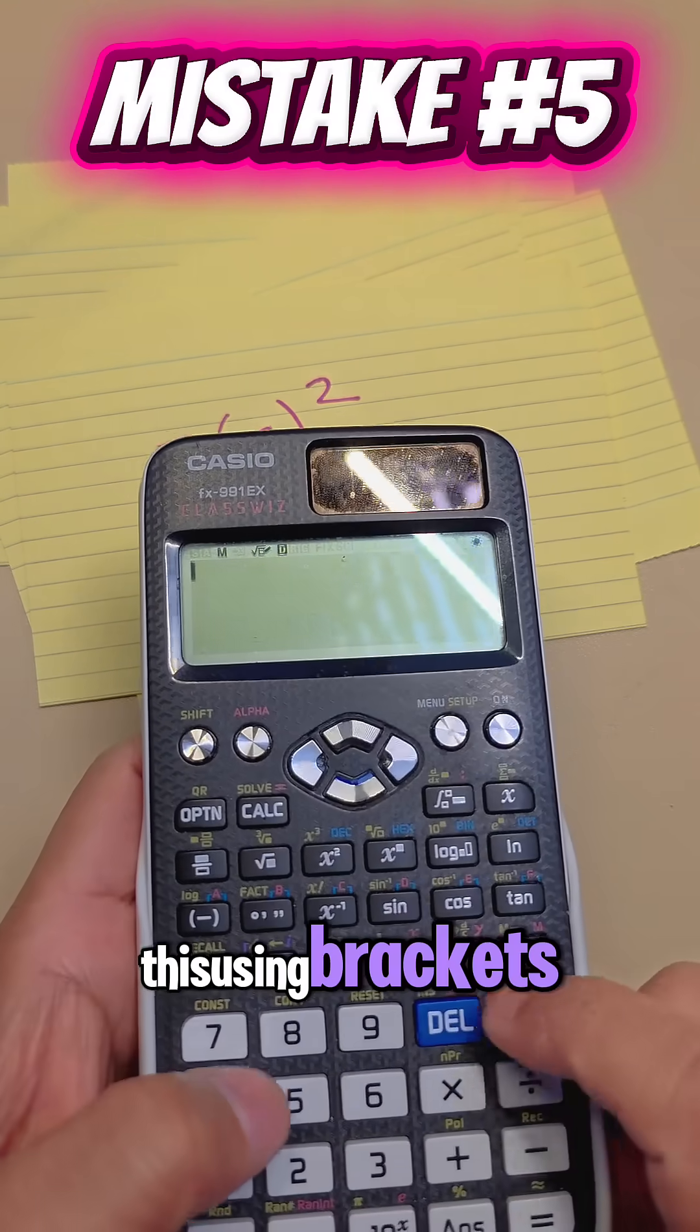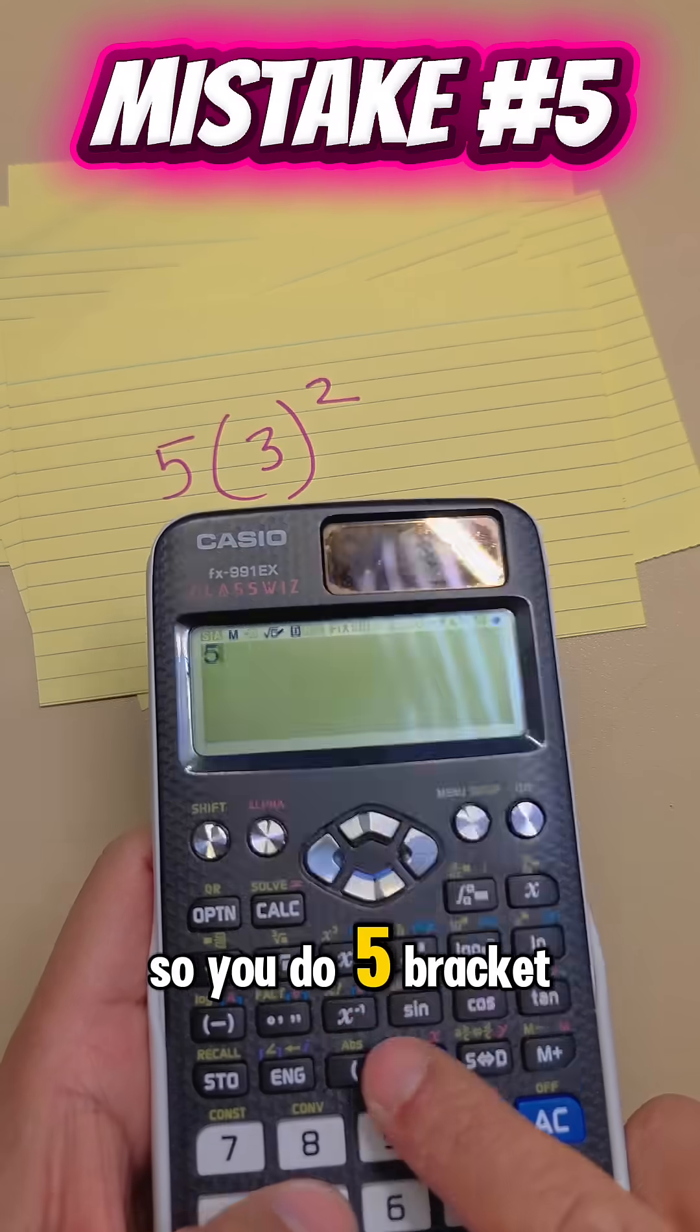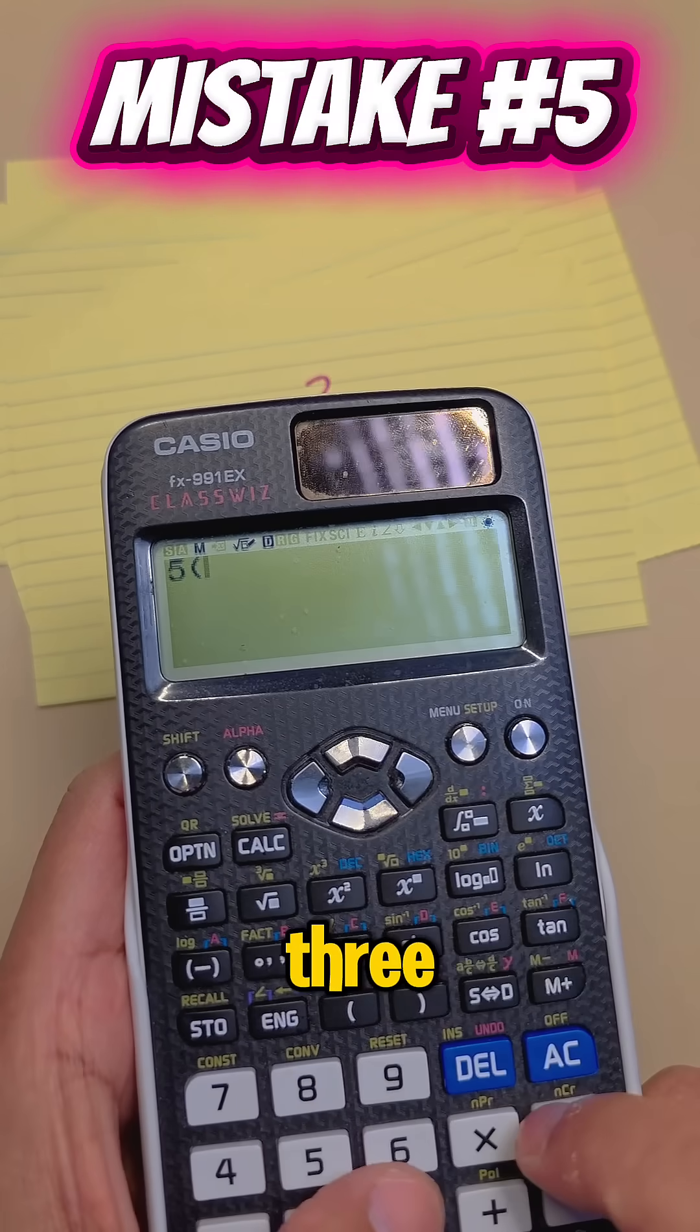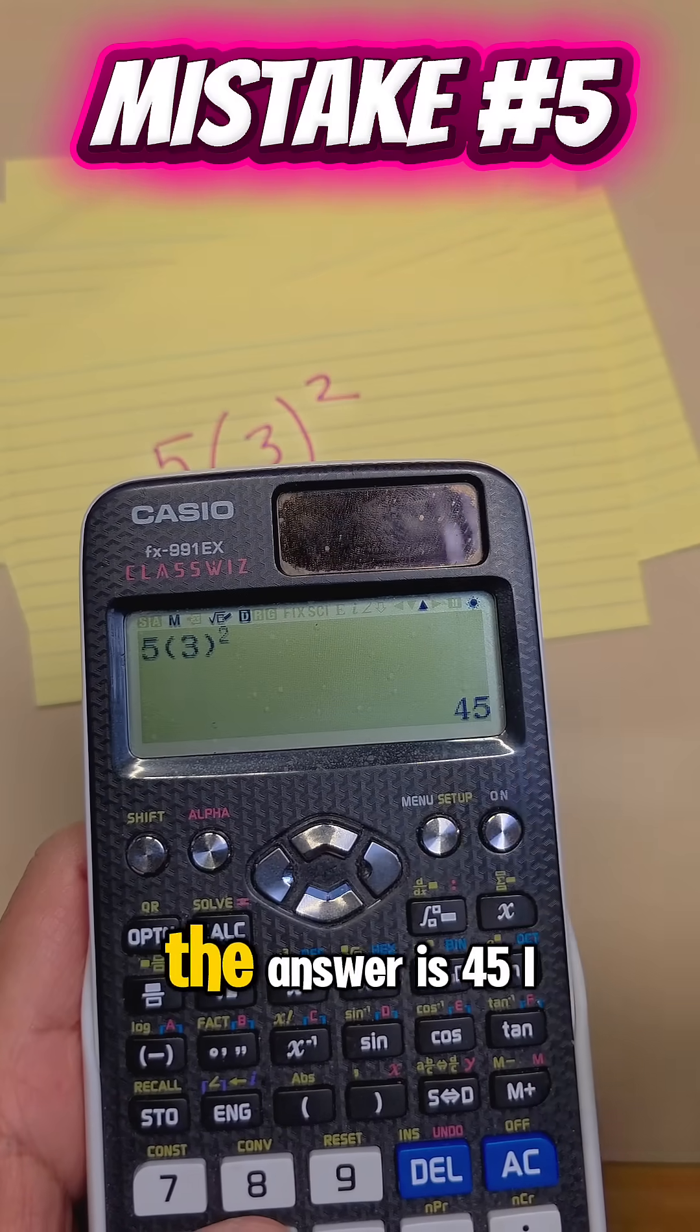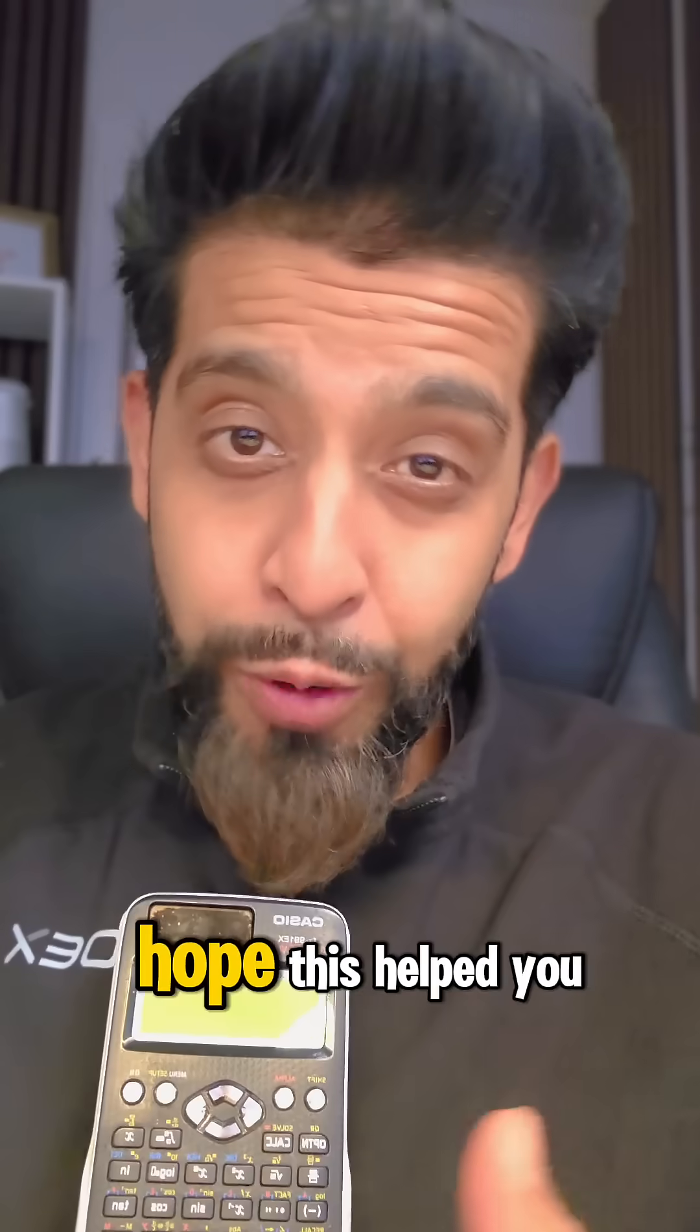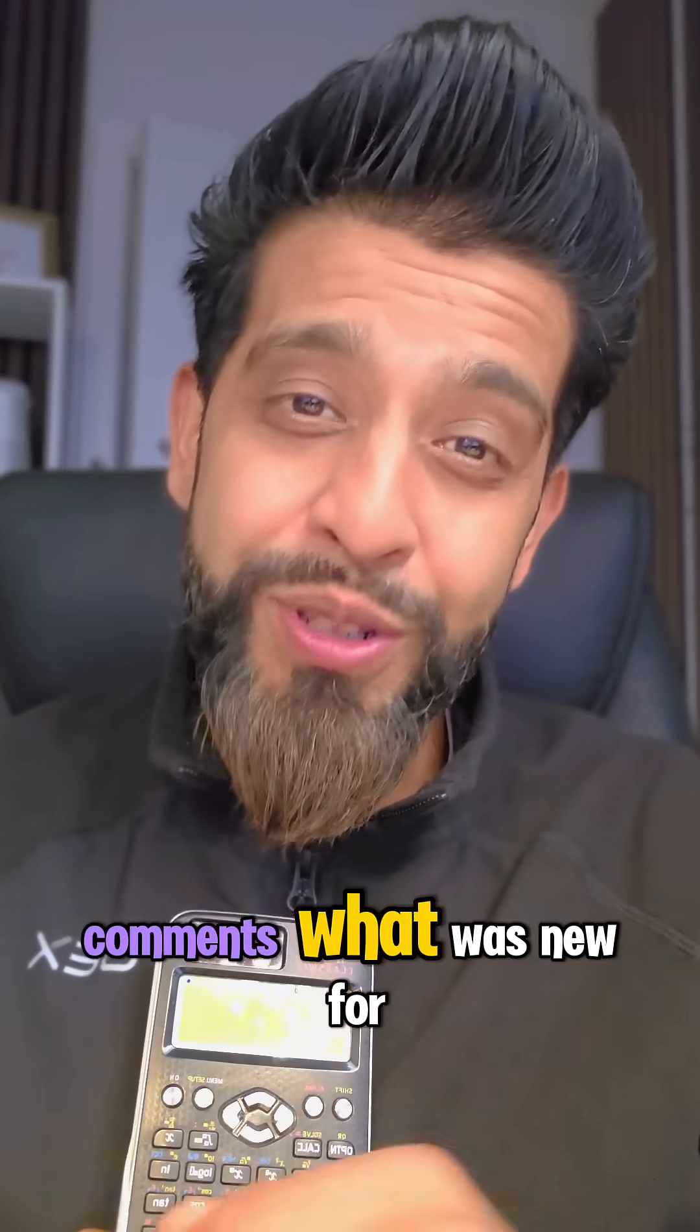So you can do it like this using brackets. So you do 5, bracket, 3 squared, and as you can see, the answer is 45. I hope these helped you. Let me know in the comments what was new for you.